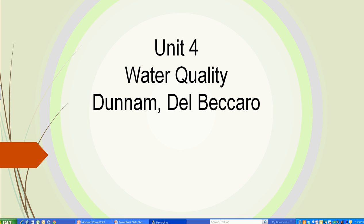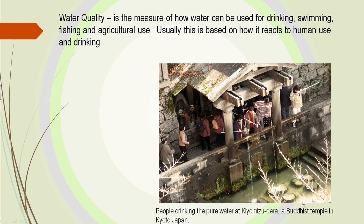This is SAT 105, Unit 4, Water Quality. Water quality is the measure of how water can be used for drinking, swimming, fishing, and agricultural use.